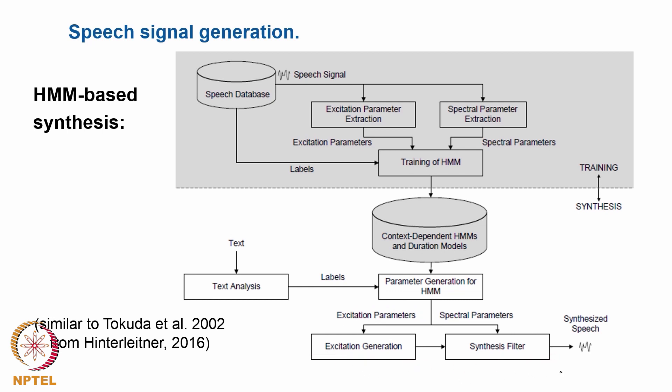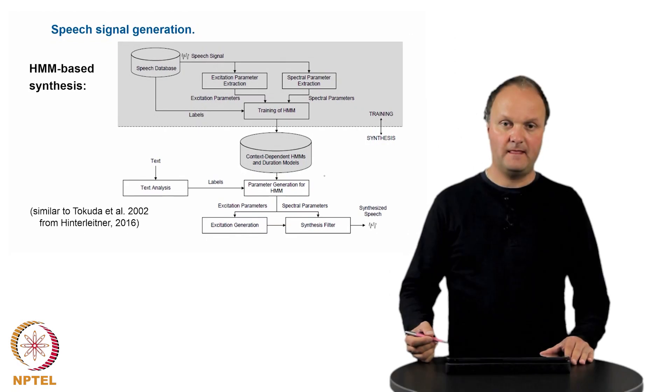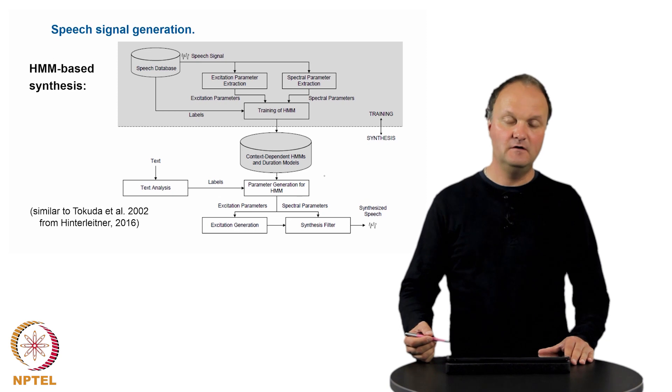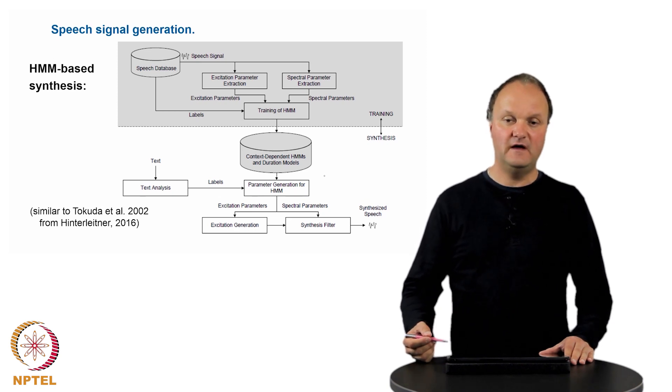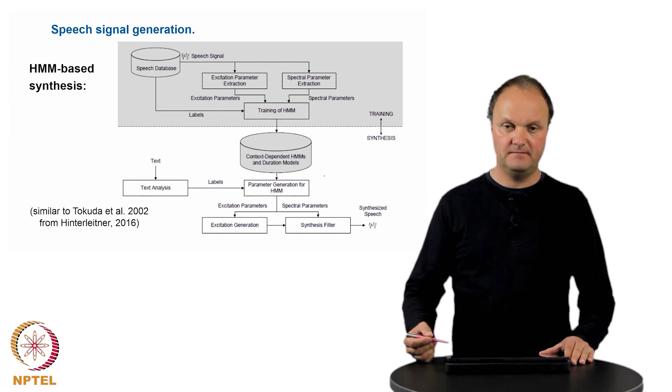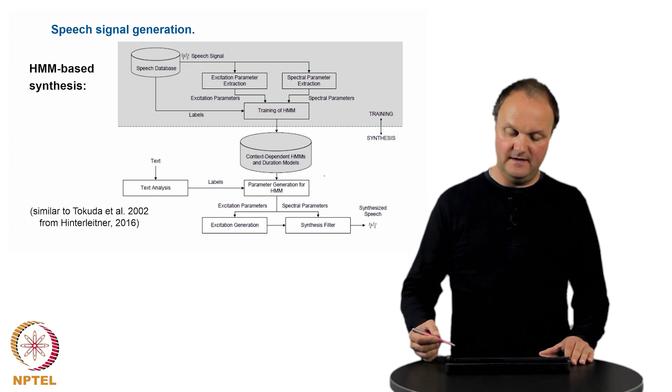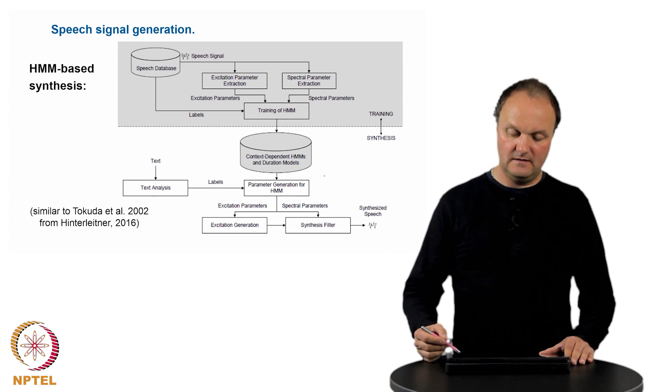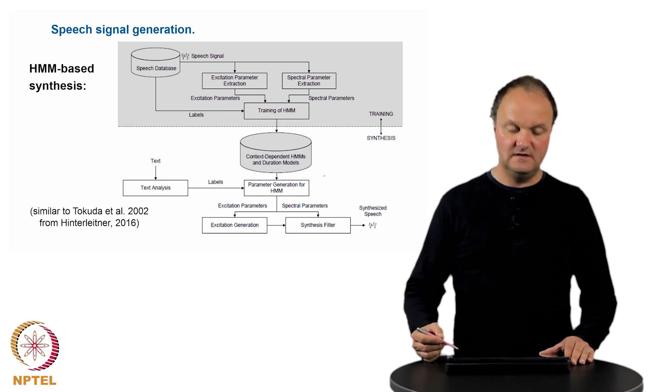The results from this hidden Markov model-based synthesis process are rather good, although they might not necessarily reach the quality of a unit selection synthesizer, depending, of course, on the inventory of that unit selection synthesizer. The big advantage of the hidden Markov model-based approach is that the inventory is much smaller, the footprint of this synthesizer is much smaller than the one of the unit selection synthesis.